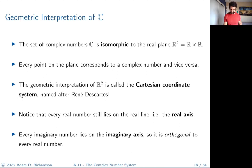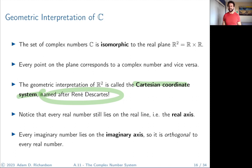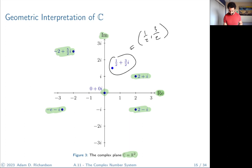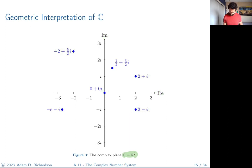The geometric interpretation of R² is called the Cartesian coordinate system, named after René Descartes himself. It's ironic that he didn't like complex numbers, because the best way to understand them is with his own construction — the Cartesian plane. Every real number still lies on the real axis, so we can visually see the containment of the real numbers within the complex numbers.